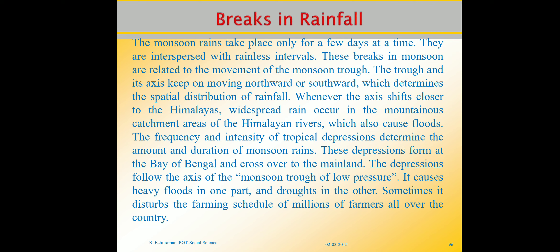This irregularity sometimes disturbs the farming schedule of millions of farmers all over the country. That's enough for advancing monsoons, or the southwest monsoon — the rainy season. Go through page numbers 33, 34, and 35, including the map showing the advancing monsoon on page 34. In the next video, I will tell you about the retreating monsoon. Goodbye.